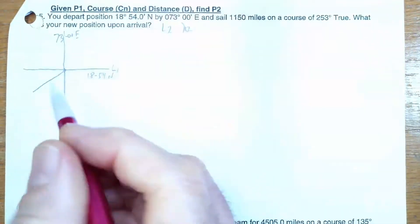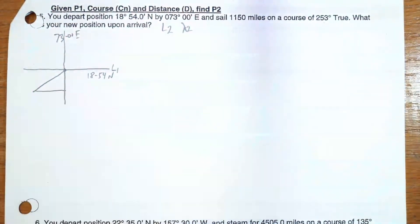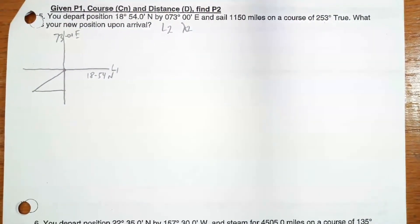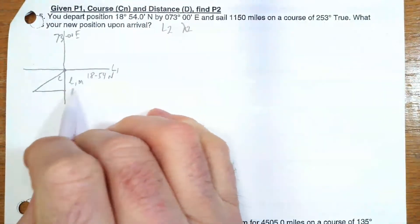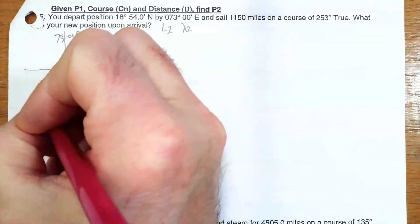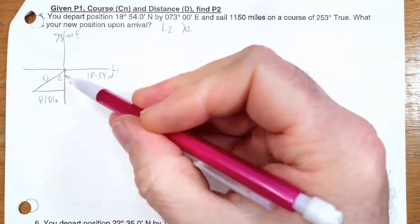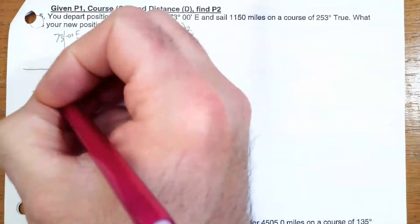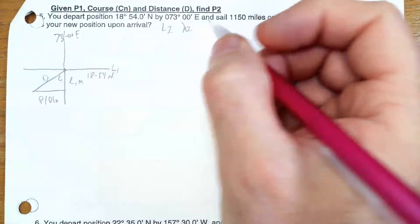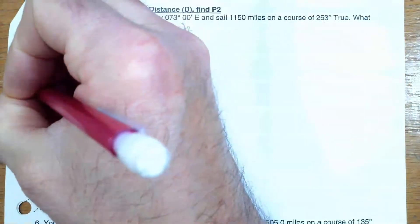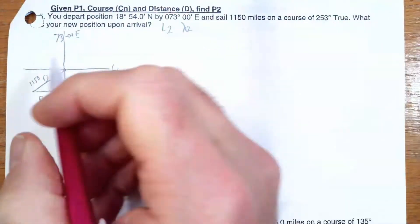So what I suggest you always do is do the north-south component first and the east-west second. Doing north-south first gives me this triangle. This side is going to be L — and also M — and this side is going to be P and D-low. They're related but not the same. And here's D. I was given the course and the distance D, which is 1,150 miles, and I was given 253 as the course.